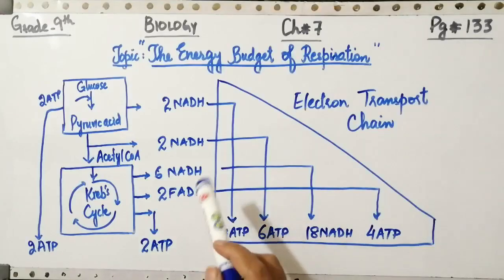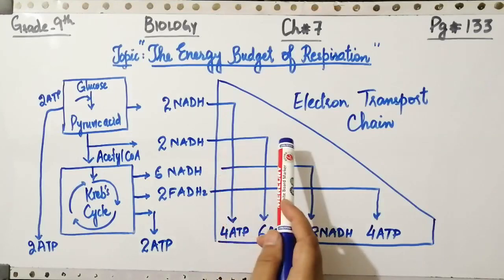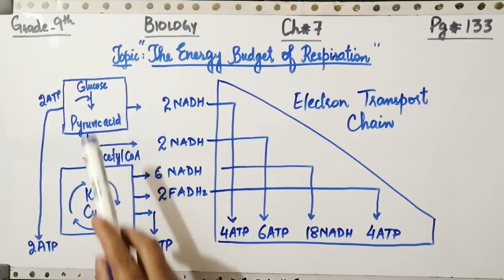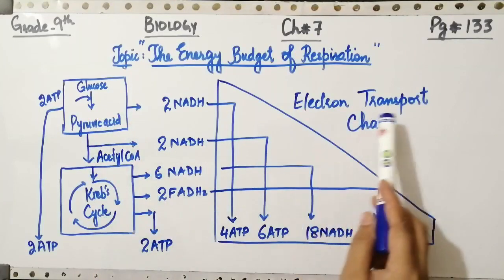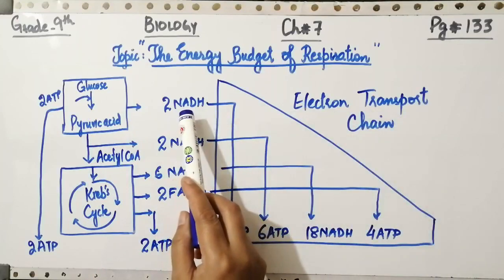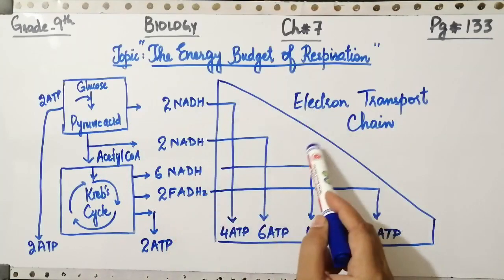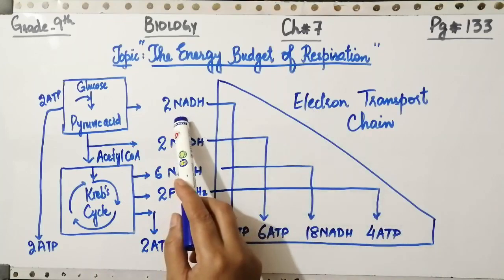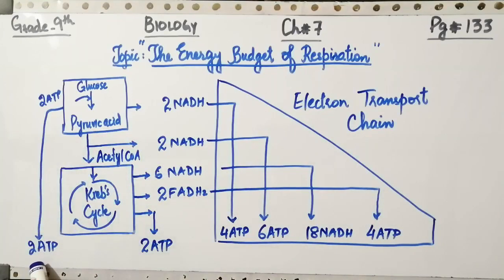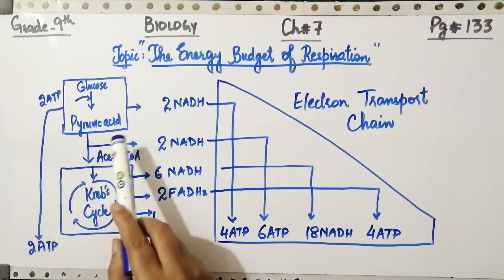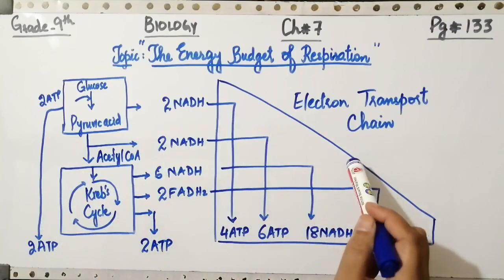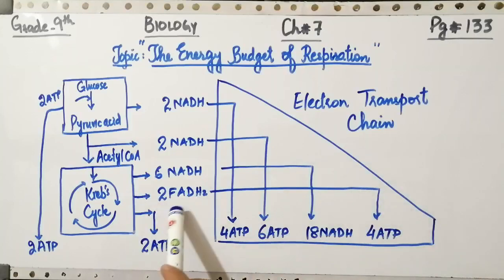Dear students, in front of you there is an energy chart of respiration in which three important steps are glycolysis, Krebs cycle, and electron transport chain. Each NADH produces three ATP in the electron transport chain. The NADH generated in glycolysis gives two ATP, as one ATP is spent to transport it across the mitochondrial membrane.